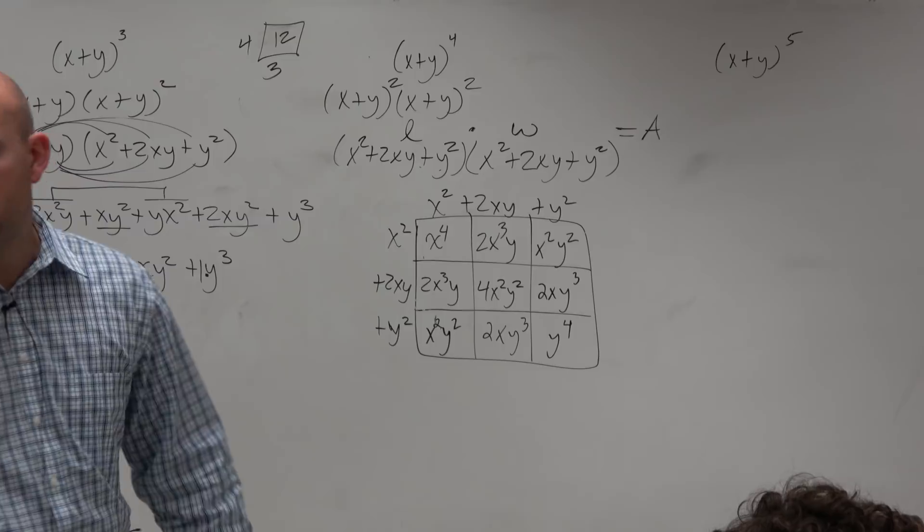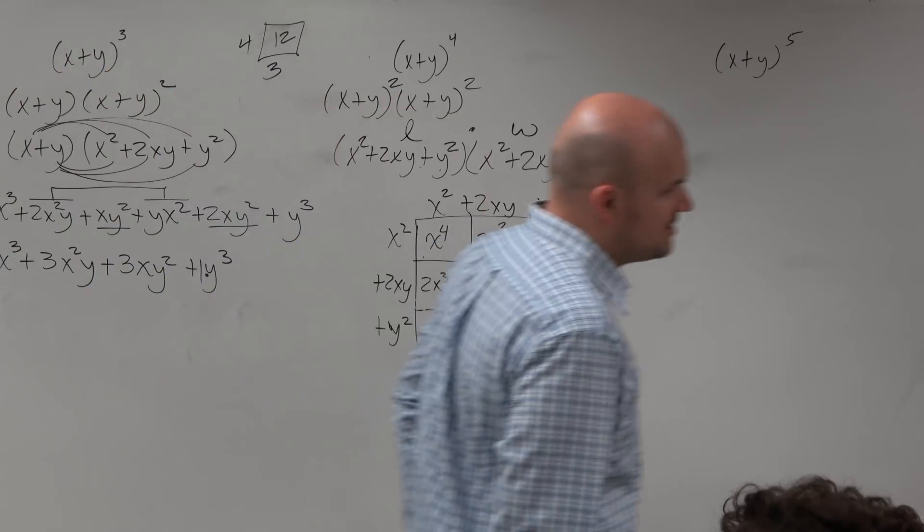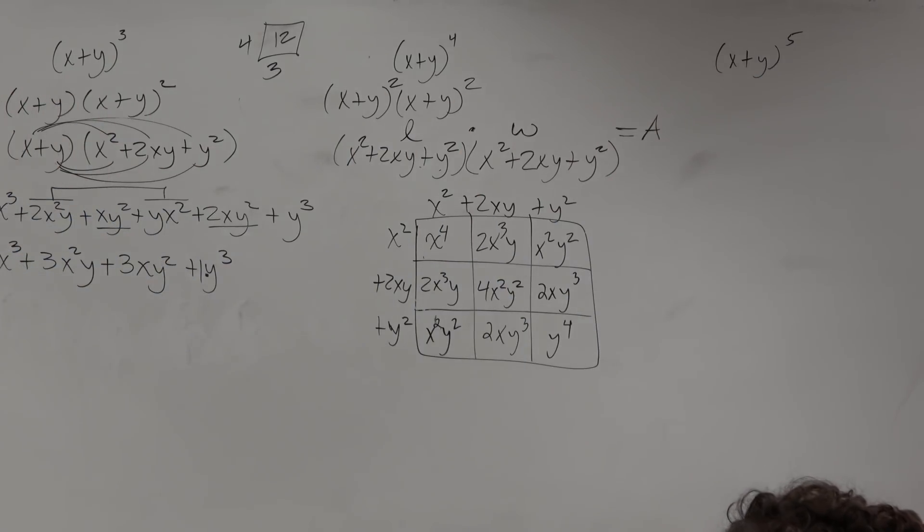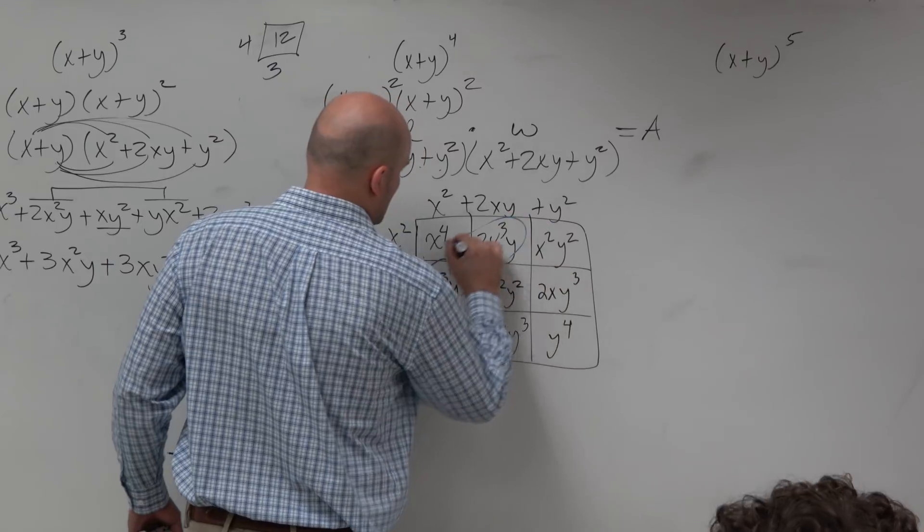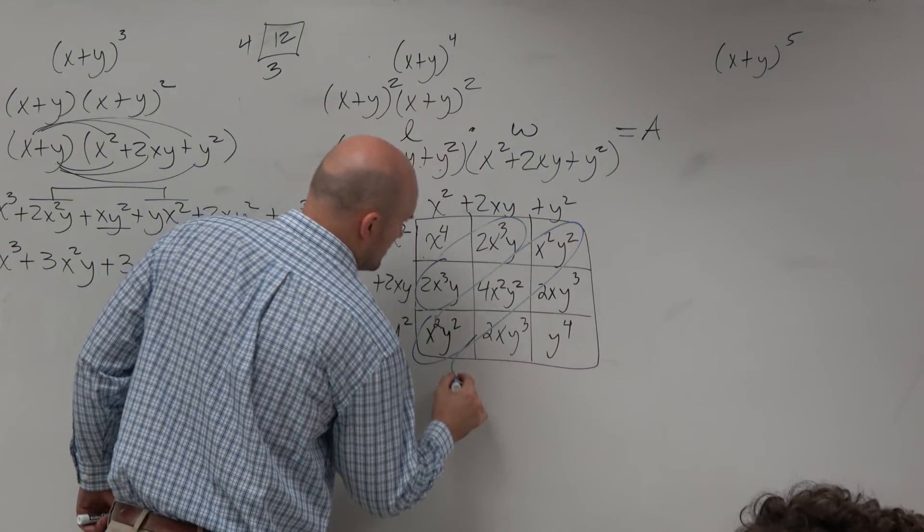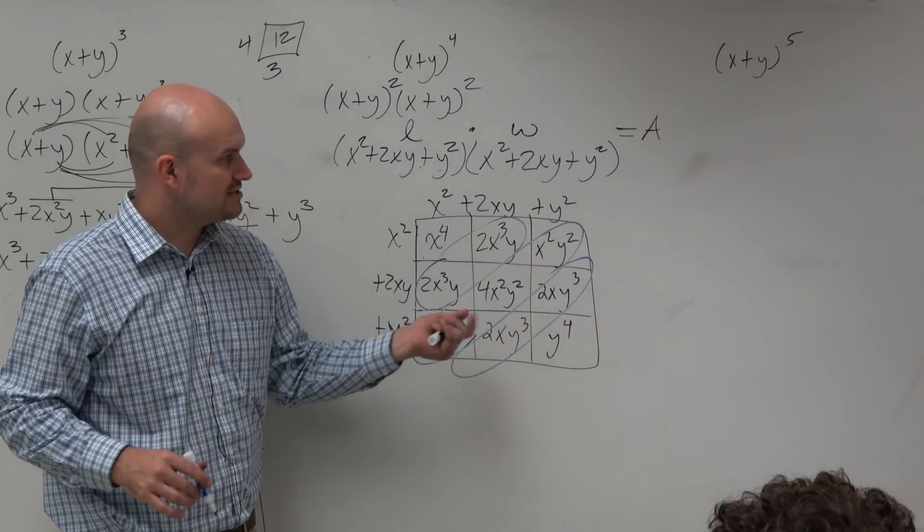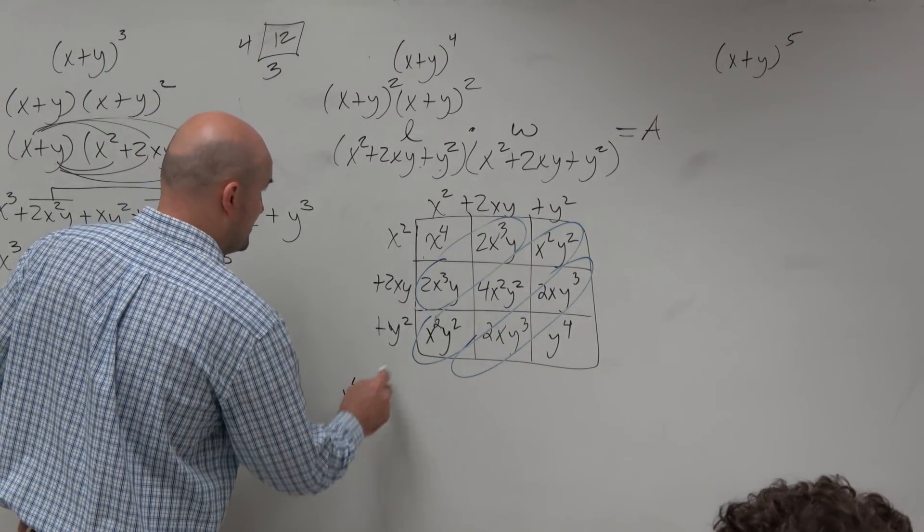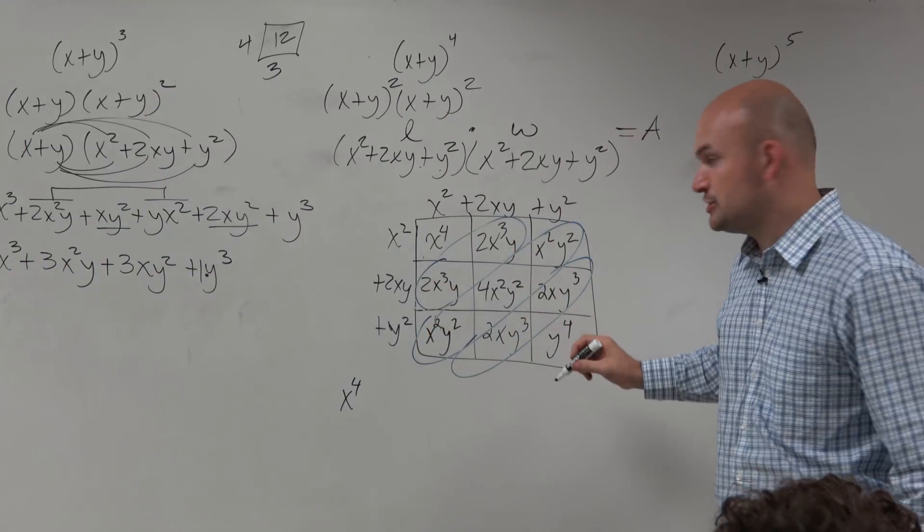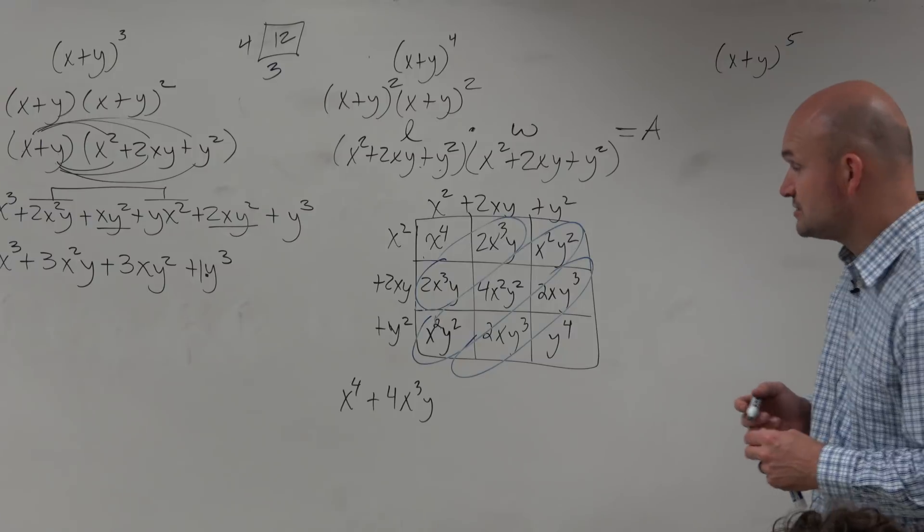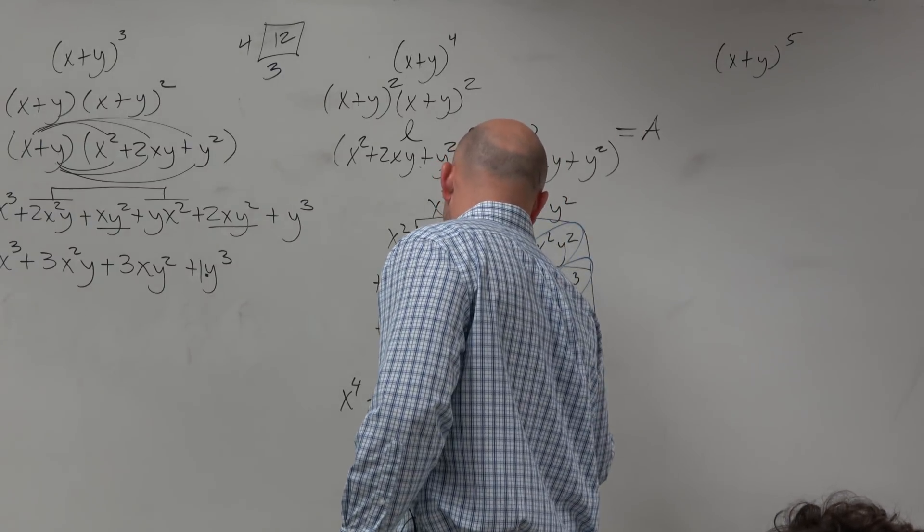Now, the thing I really, really like about the box method is, as long as you have polynomials that are in standard form, when you guys use this method, rather than trying to find the like terms, rather than trying to find where they're at, what you guys will notice is the like terms are on the diagonals. So rather than trying to find where are they, what are they, you can see they're on the diagonals. So therefore, now I can just write this as x to the fourth. 2x cubed y plus 2x cubed y is 4x cubed y. x squared y squared plus 4x squared y squared plus x squared y squared is 6x squared y squared.